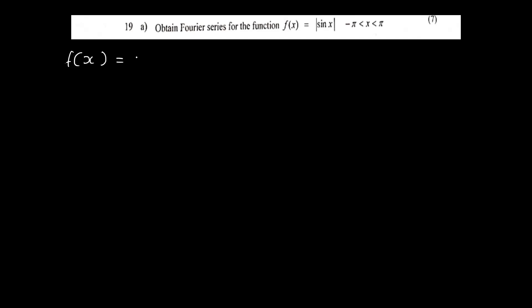We have to obtain the Fourier series for the function f(x) = |sin x| for the range -π less than x less than π. We need to check whether this is an even function or odd function.